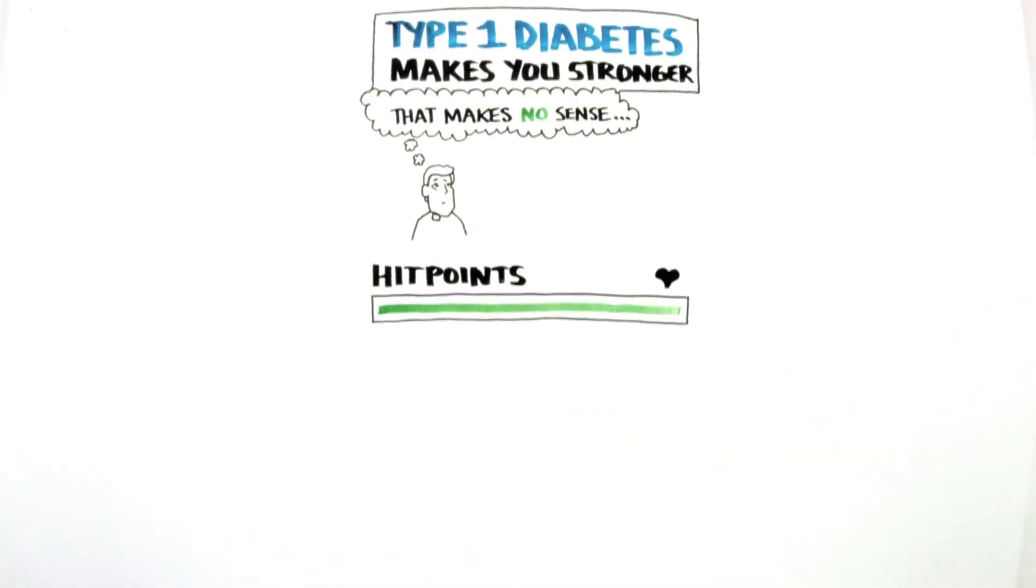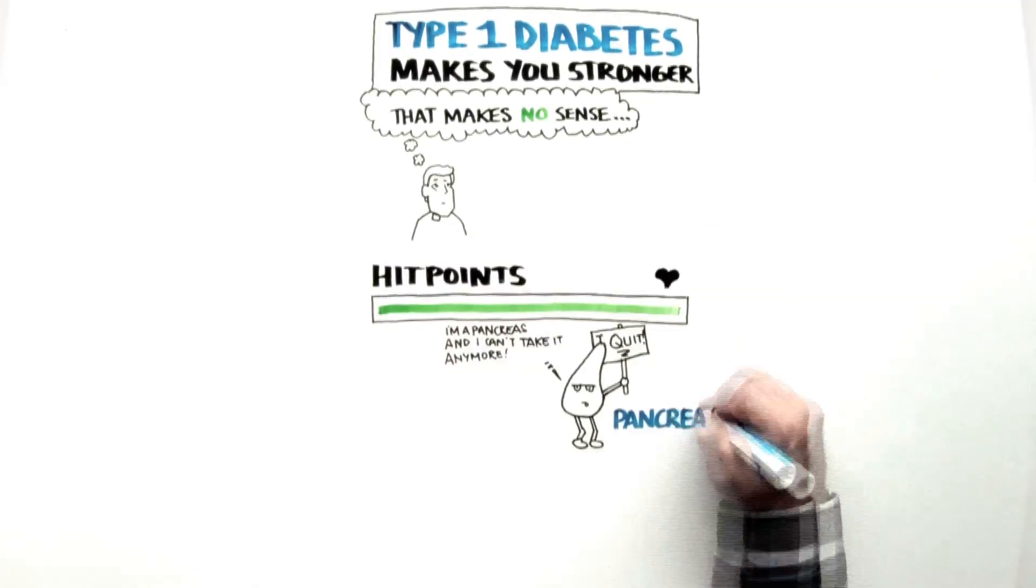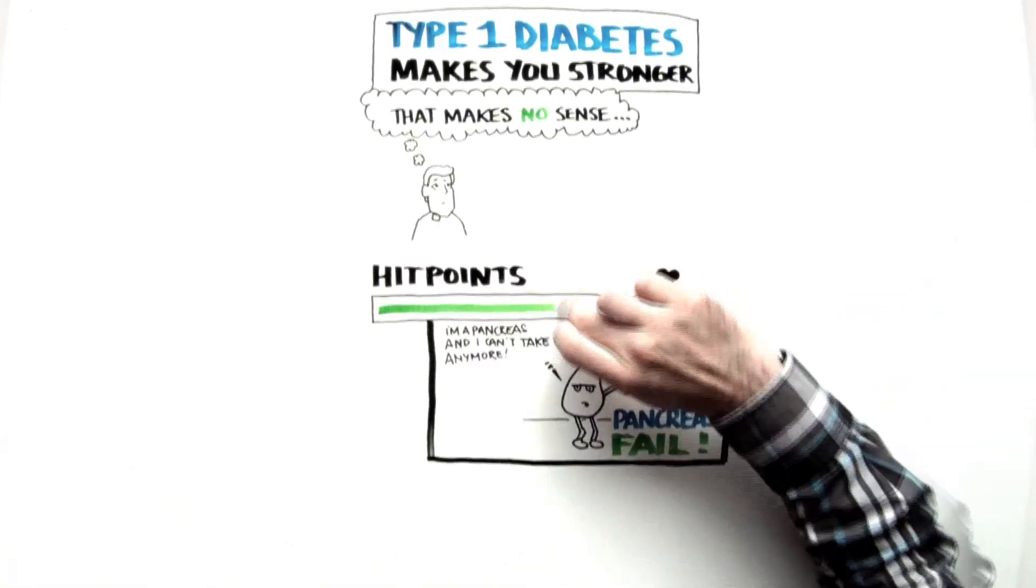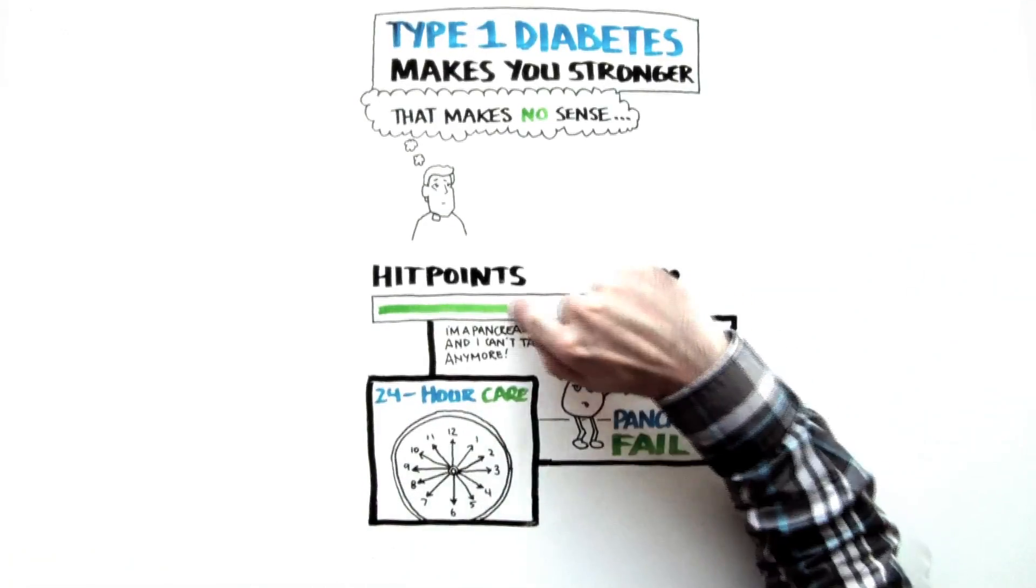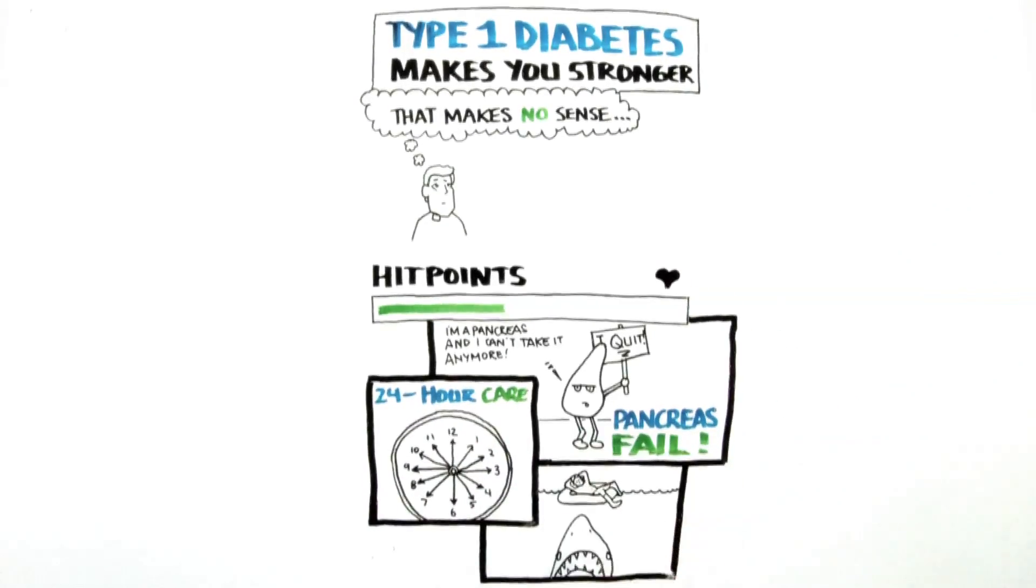One of my vital organs was randomly shut down by my immune system when I was a child. And now, all day, every day, I have to do what most people's pancreases do automatically. And on top of that, it can be dangerous.